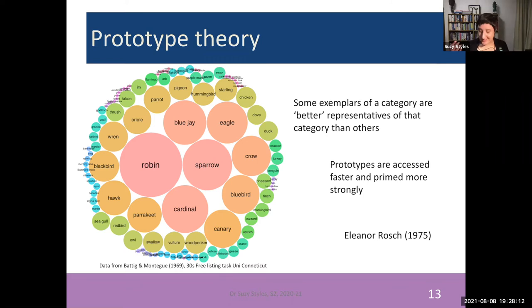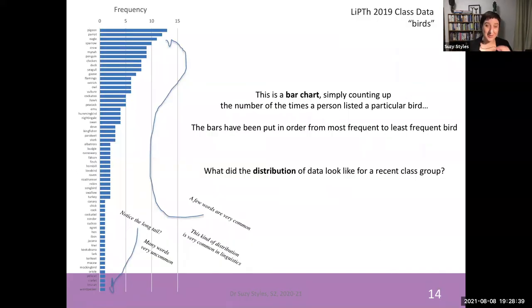What we need to recognize in this theory though is if a symbol is shared among a community who use their language together then that category structure might differ for different linguistic communities. So what I want to show you now is some data that we've collected over the past couple of years in this class language and perception and thought. So in 2019 when we asked our class to list down in 120 seconds as many different birds as they could think of, this is the outcome of their listing task.